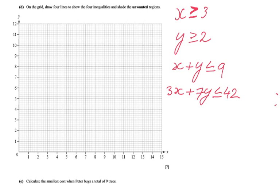This is part two. For part one of this question, we created these four inequalities: x bigger or equal to 3, y bigger or equal to 2, x plus y had to be smaller or equal to 9, and 3x plus 7y smaller or equal to 42. Let's have a go.